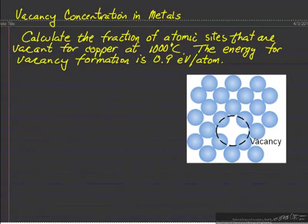In this problem, I'm going to calculate the fraction of atomic sites that are vacant for copper at a thousand degrees C, and we're given the energy for vacancy formation is 0.9 electron volts per atom.